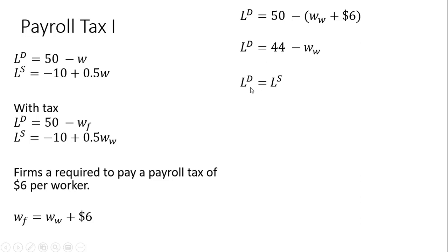Now all we're going to do is set this equal to the labor supply equation. And we'll have one equation and one unknown. Adding 10 to both sides and adding the wage of workers to both sides and dividing through by 1.5, the wages of workers will be $36.